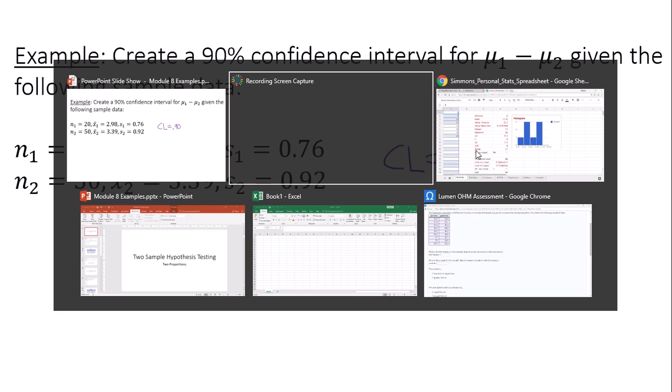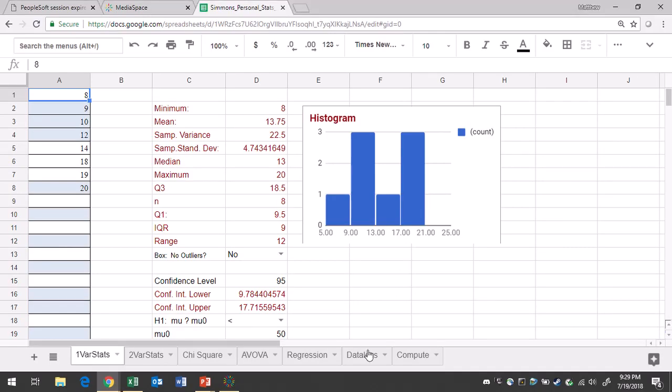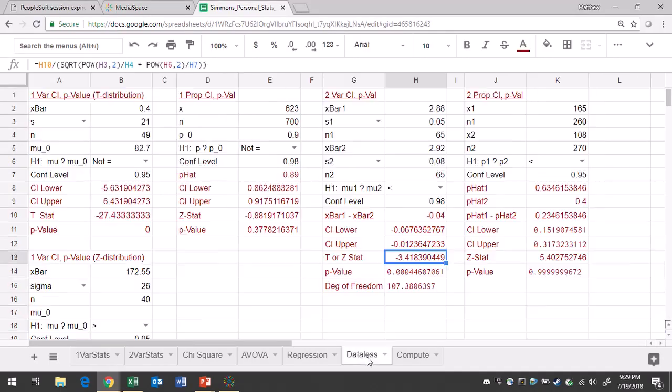So let's go to Google Sheets. Let's go to the data list tab and type in the mean, standard deviation, and sample size for both groups.